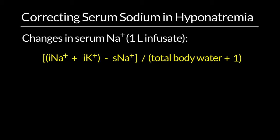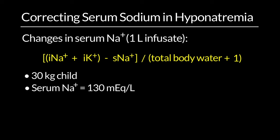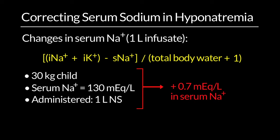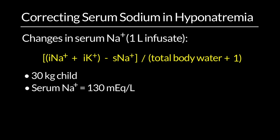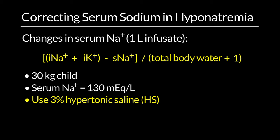For example, if you have a 30 kg child with serum sodium of 130 administered one liter of normal saline, the change in serum sodium would be only 0.7 mEq/L. So normal saline is not effective in changing the serum sodium. If you want to correct serum sodium, it is better to use 3% hypertonic saline.